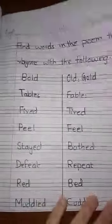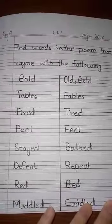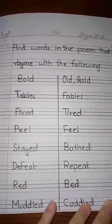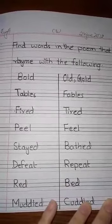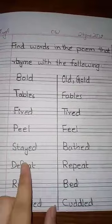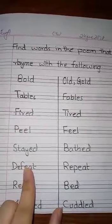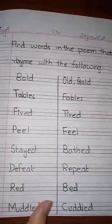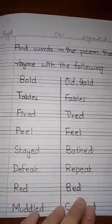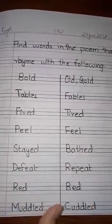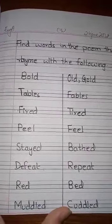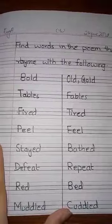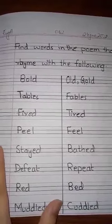On the next page, write the question: find words in the poem that rhyme with the following. On one side write the words: bold, tables, fire, peel, stayed, defeat, red, muddled.